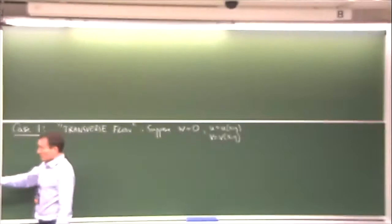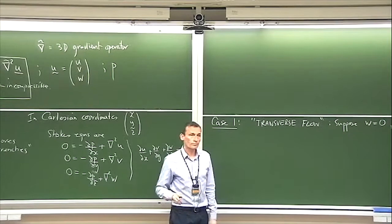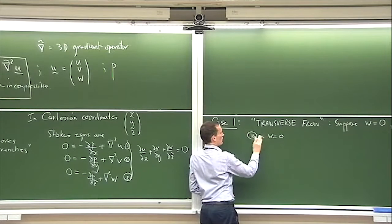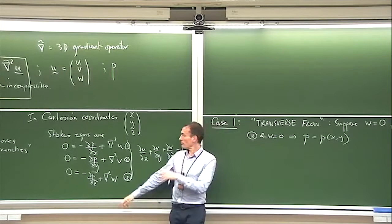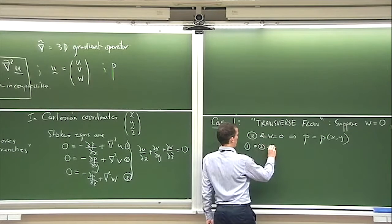Then we get a simplification. w equals zero tells us that dp/dz-tilde is zero, so p is just a function of x and y. Then equations one and two imply a 2D version of the Stokes equations, with the gradient now being a two-dimensional operator. We also have du/dx plus dv/dy equals zero — that's the divergence-free condition in 2D.